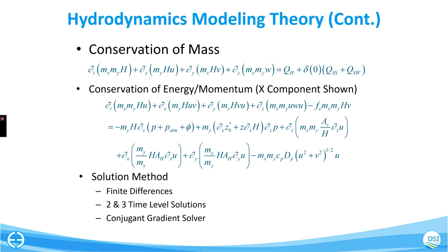These are the governing equations. In the conservation of mass, QH represents the mass balance changes due to heat fluxes — so that could be evaporation or condensation. Two terms represent surface water or subsurface groundwater coming into the system. The remaining terms represent transport between the X, Y, and Z directions. The M terms are multipliers for the cell dimension, H is the total height of the water column, and U, V, and W are the component velocities.